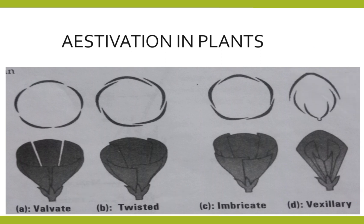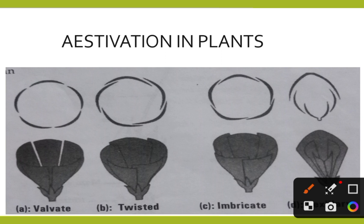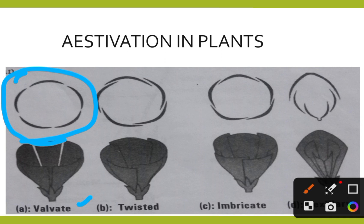In valvate aestivation, the petals are arranged in a proper order and they are not overlapping one another — they are placed separately. This type of aestivation can be seen in Calotropis flowers and green chilies. There is a gap between the petals or sepals, and if that gap is present, we call it valvate type of aestivation.